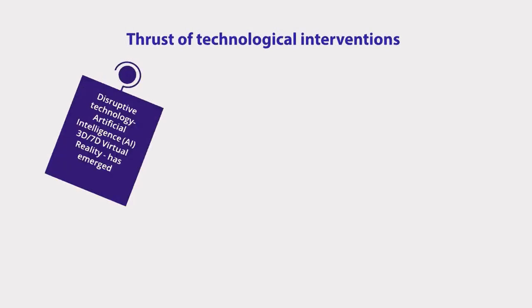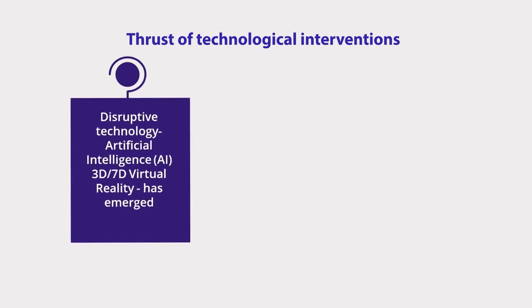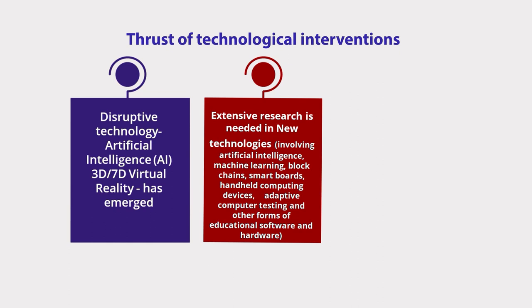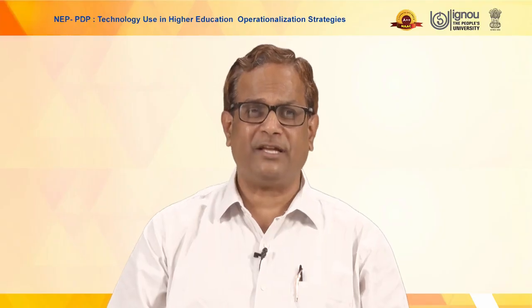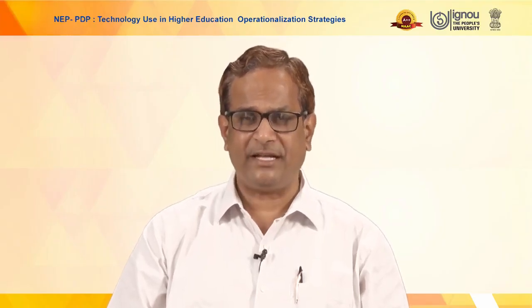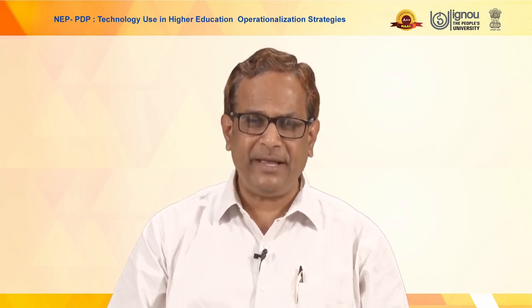The thrust of technological interventions includes disruptive technologies like artificial intelligence, which will make a major change in teaching, learning, and assessment. 3D and 7D virtual reality has emerged. Extensive research is also needed in new technologies involving artificial intelligence, machine learning, blockchain, smart boards, handheld computing devices, adaptive computer testing, and other forms of educational software and hardware. It is not only a hardware or software part — the humanware component is also going to play a major role. If all three sides of the triangle are in order, we can get the desired output.